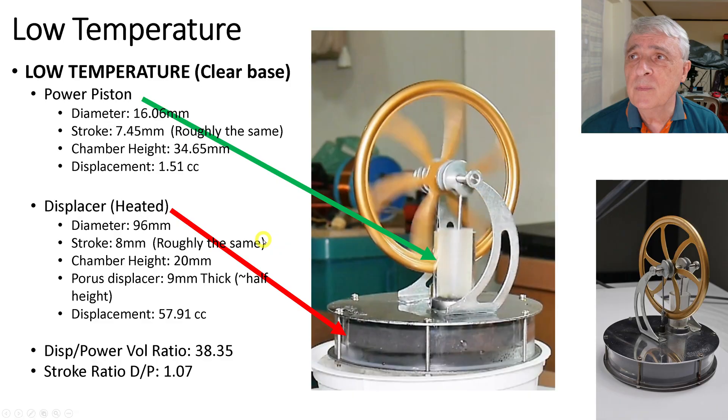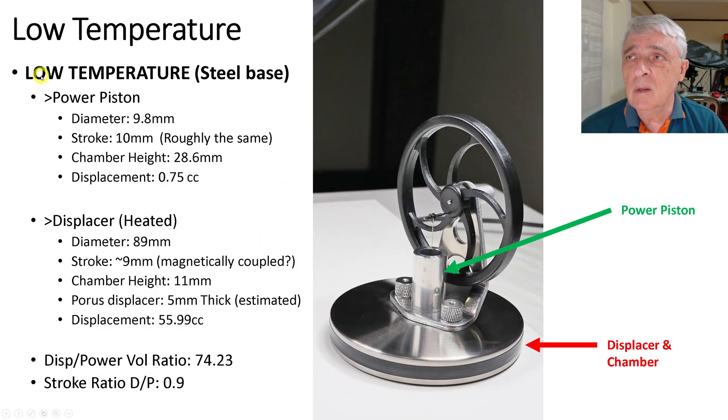Next. This is the second low temperature. It has a steel base, so I call it steel base. The power piston diameter up here, that hole, is 9.8 millimeters. The stroke is 10 millimeters, roughly the same as the displacer. The chamber height is 28.6 millimeters, so that is this right here. And the displacement is 0.75 cc's.